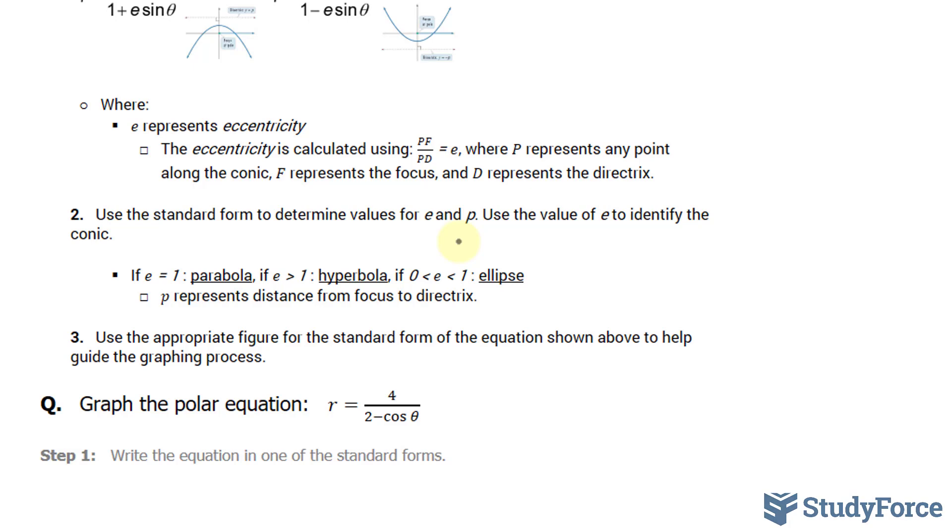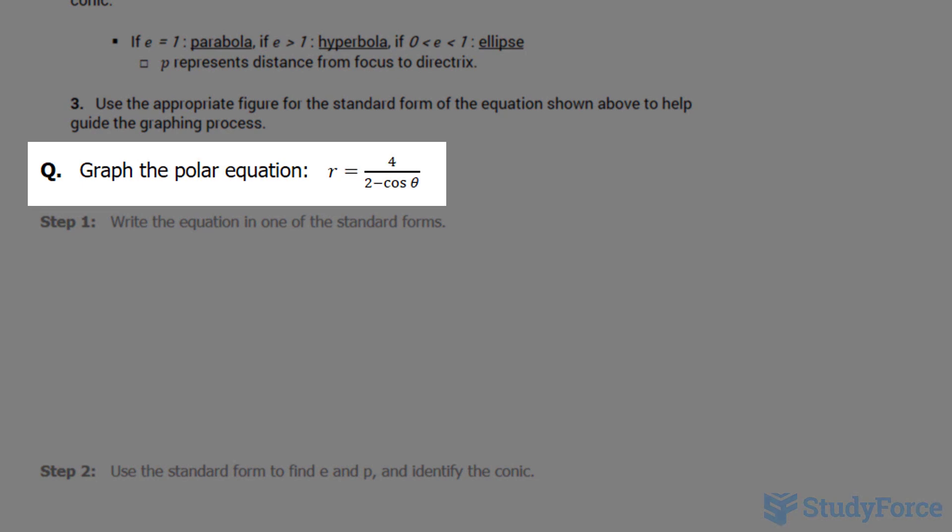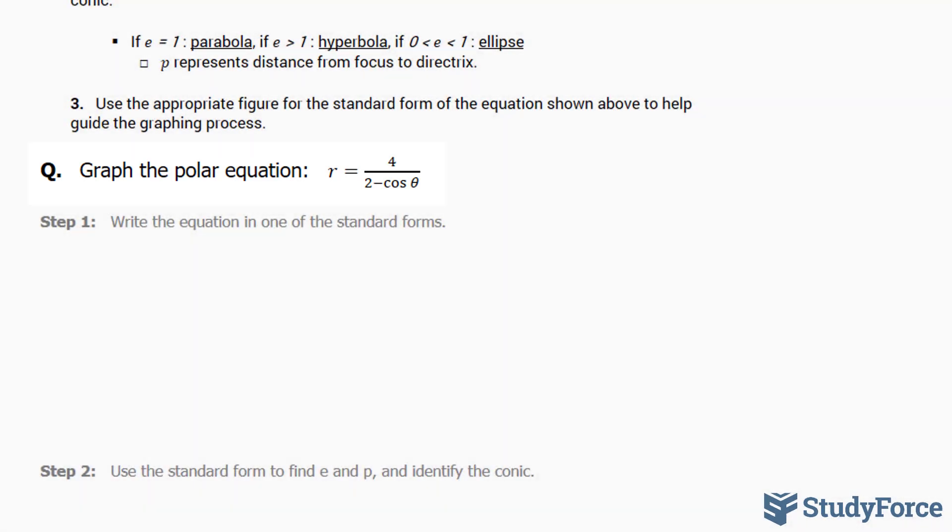Finally, in step number three, you gather up all of this information and you graph the conic. Question one reads: graph the polar equation r equals 4 over 2 minus cosine theta. We'll follow the steps that were outlined above.